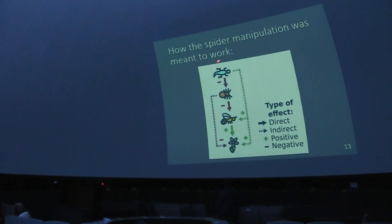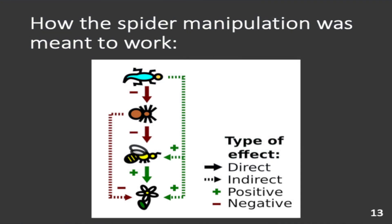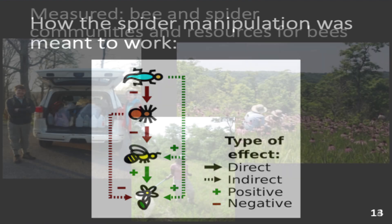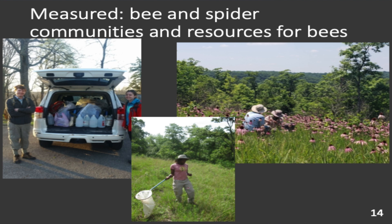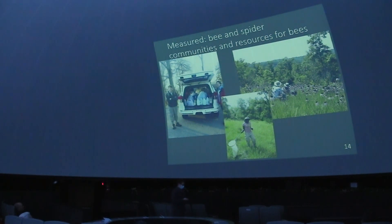One of the challenges with studying how predators affect bees is how do you change the predator communities. Instead of us going out and removing or adding spiders, we used a lizard, let it do its thing, and followed along to see the consequences for bees. The pictogram looks like this: the lizard has a negative effect on spiders, we think spiders have a negative effect on at least some bees, and bees as pollinators have a positive effect on flowers. We measured floral resources — species of flowers, number of individuals — and did the same for bees and spiders with nets.